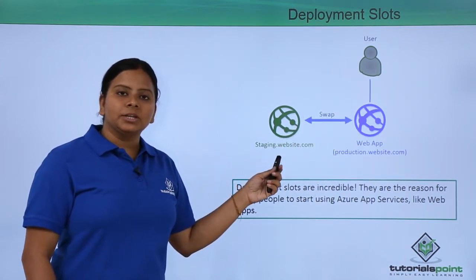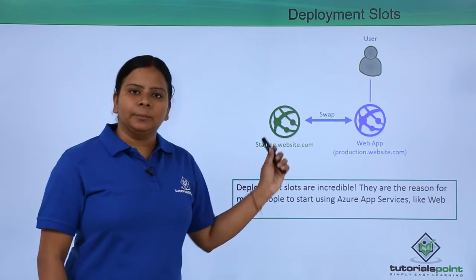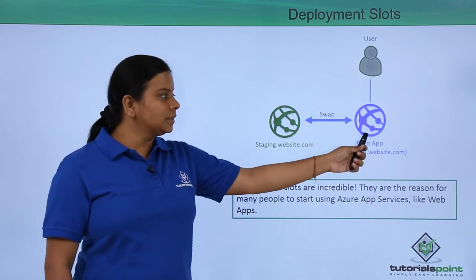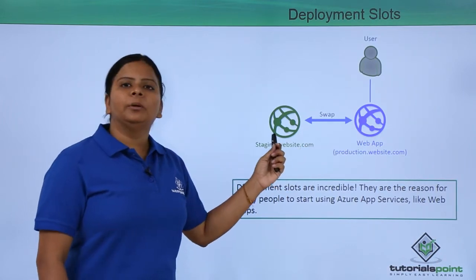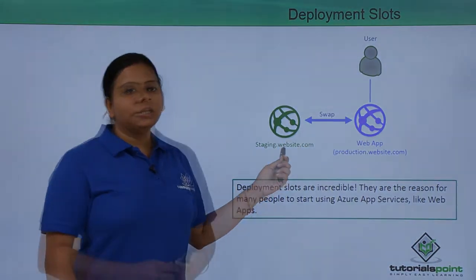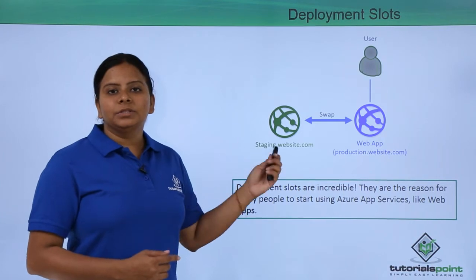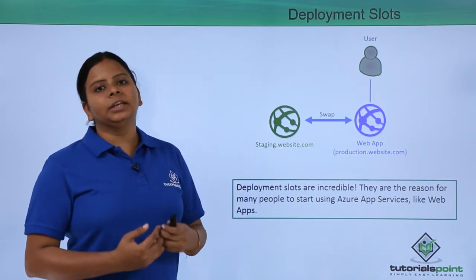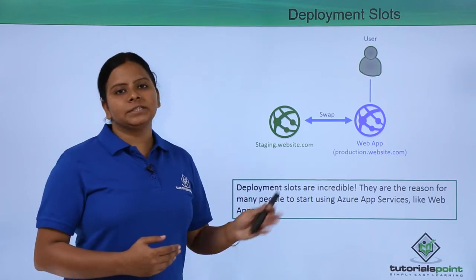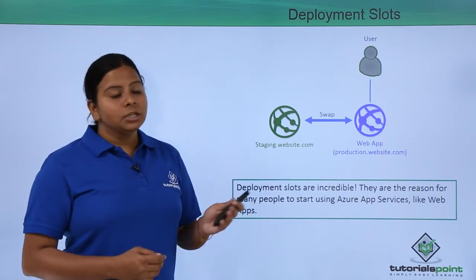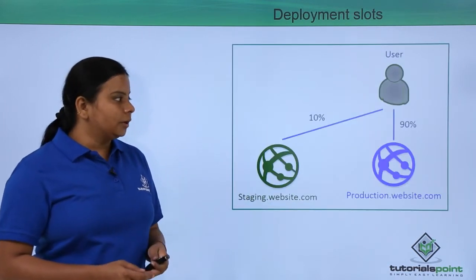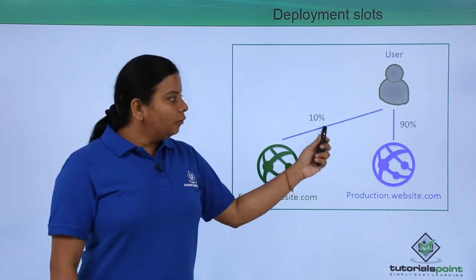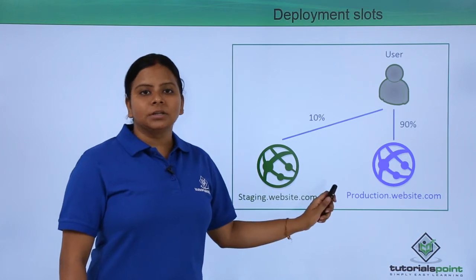We can create a new slot called staging.website.com, which will be a different deployment slot, and transfer some users to access the web application from this slot. This is very powerful — by using deployment slots, you can divide the traffic of your application coming into the server across multiple slots.